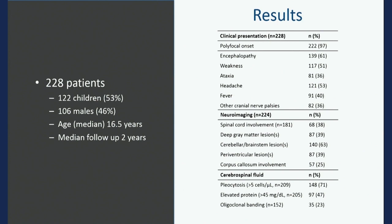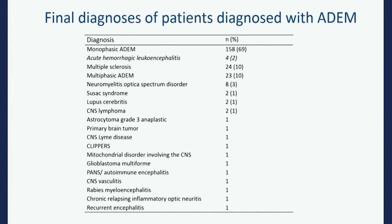40% had fevers, some had headache, and 36% had ataxia. We also looked at imaging in a separate paper — some imaging characteristics look a little like MS and some look totally distinct. Only 40% had spinal cord involvement, though not everyone had a spinal cord image. Oligoclonal bands are thought to be unusual in ADEM, and having a large multi-center group makes it easier to characterize what actually happened.